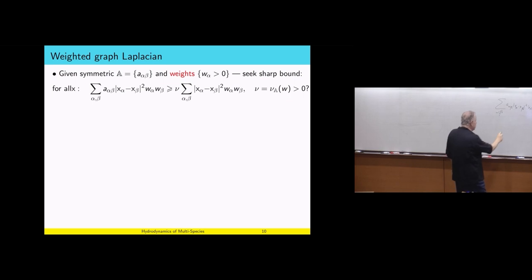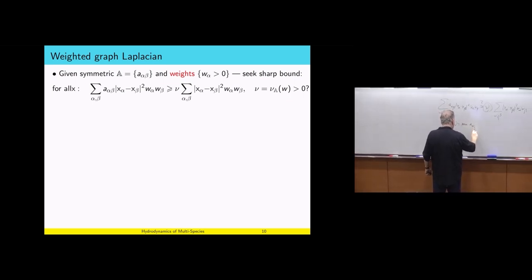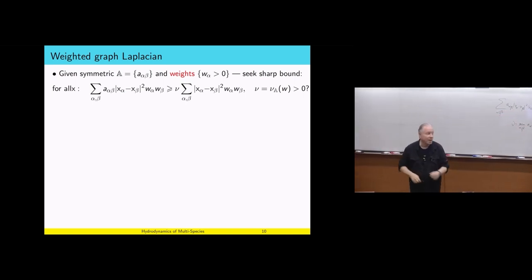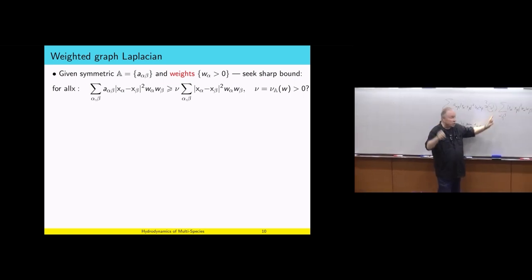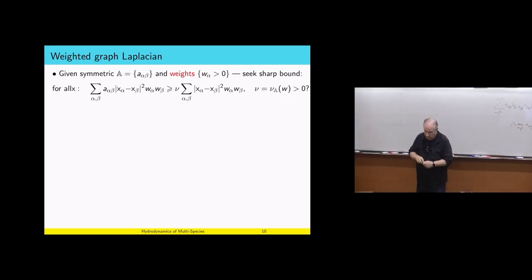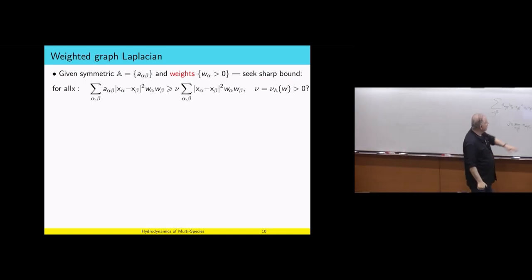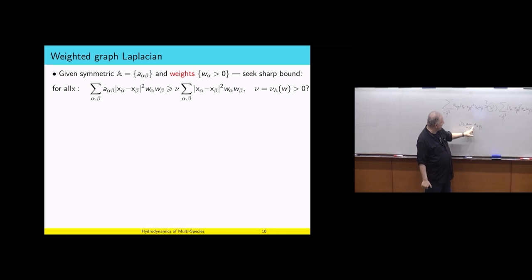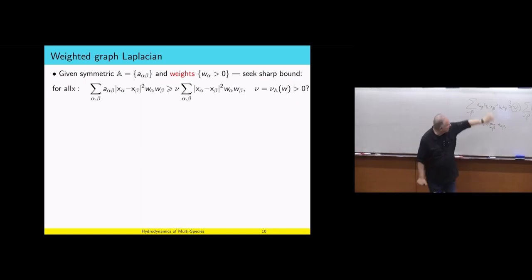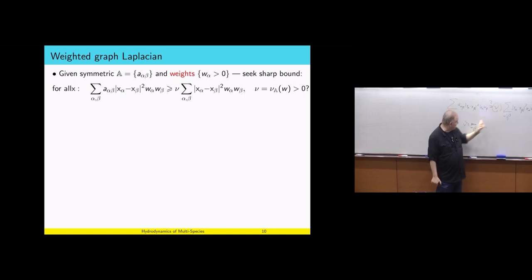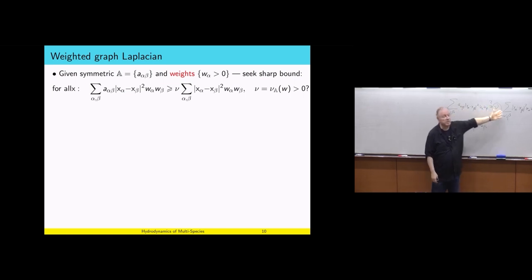If I take nu to be the minimal value of A alpha beta, clearly this holds. But I'm not asking when does this hold — I'm asking what is the best nu. Clearly the best nu is greater than or equal to the mean of A alpha beta. If all entries are bounded away from zero, I can pull the mean and get a nonzero nu. But if one entry is zero, then something positive is greater than zero — it's not sharp. Can I get a better quantity? This question plays a central role in the large-time behavior, not just for multi-species.